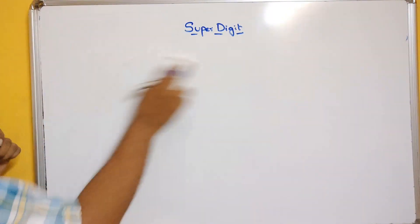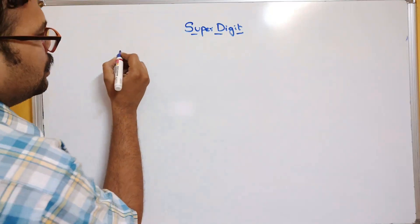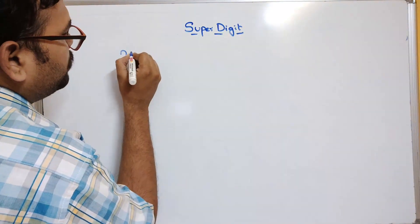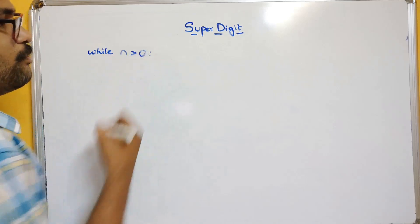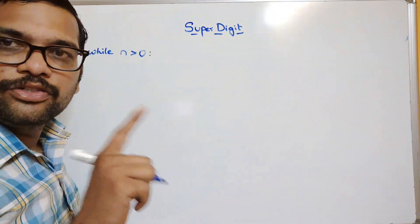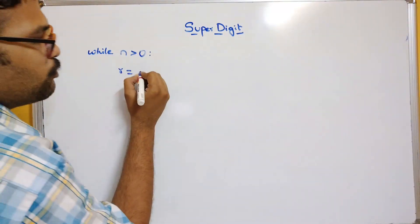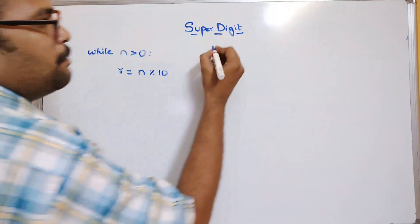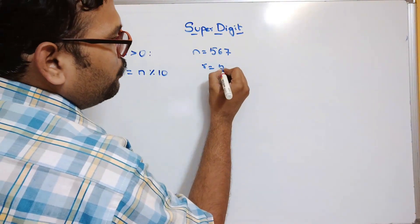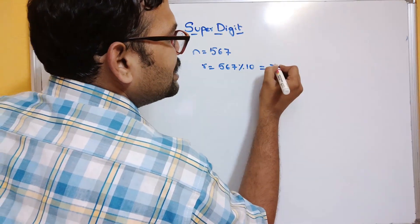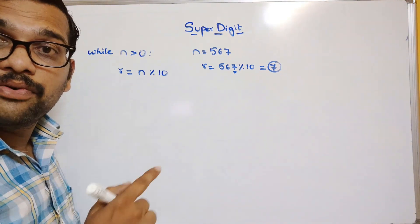To find the individual digits we apply the mod operator. We repeat the process while n is greater than 0. Using the mod operator: r equals n mod 10. For example, if n is 567, then r equals 567 mod 10, which gives 7 as the remainder — that is the individual digit.